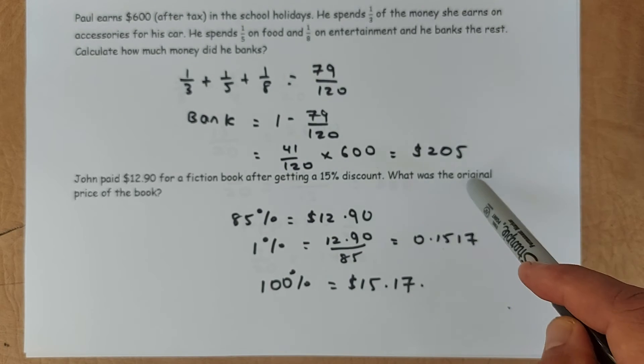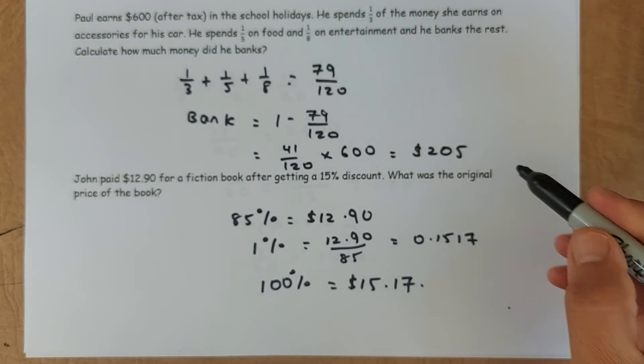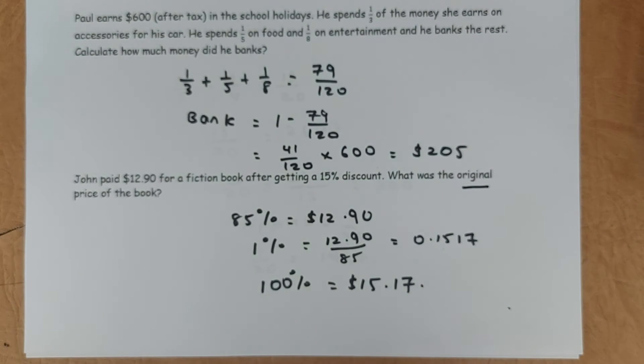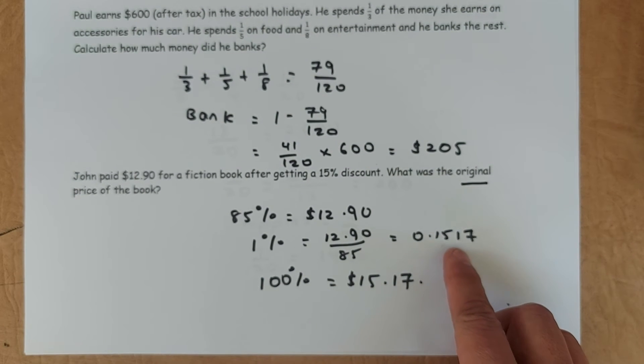So now, because you want to find the original. What is the original price? It's always the 100%. The price of a book is always 100%. So 100% is 0.1517 multiplied by 100. It will give you $15.17.